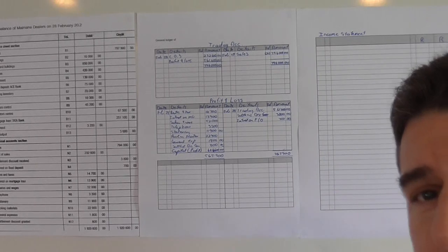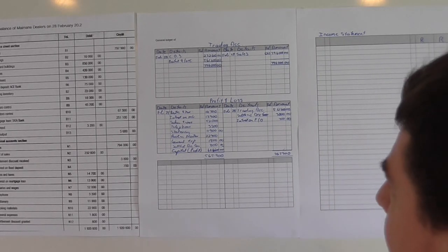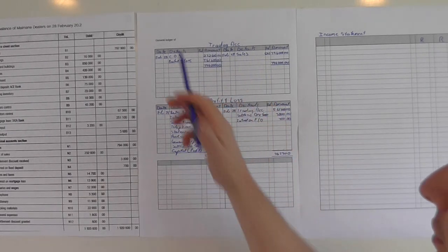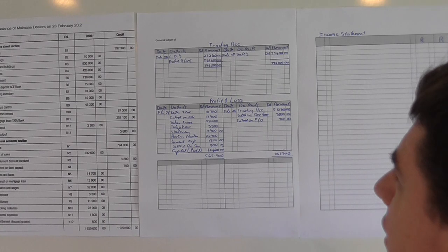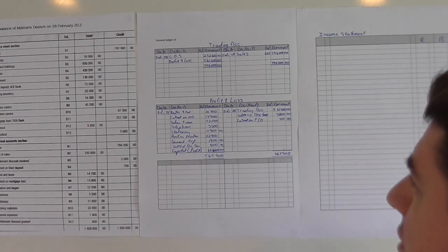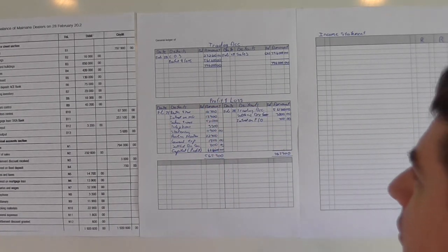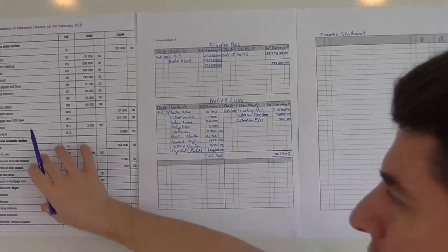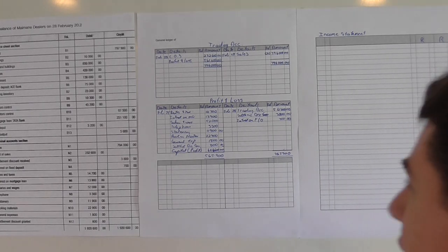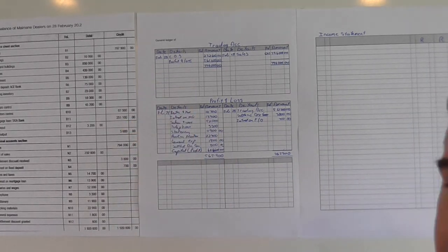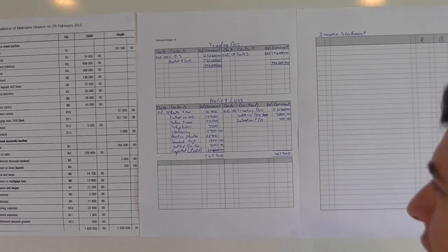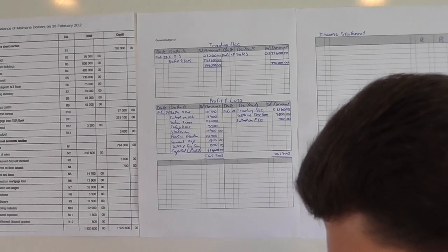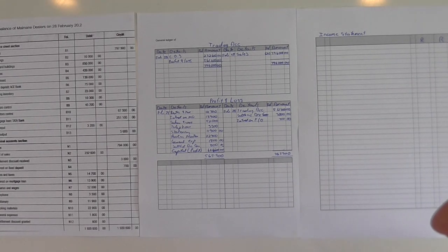To recap: we first did the trading account — sales minus cost of sales — to calculate your gross profit, which is profit before deductions. Then we transferred that amount to the profit and loss account, added incomes on the credit side and expenses on the debit side. The nominal account gave a debit balance, meaning we made a profit of 444,600.